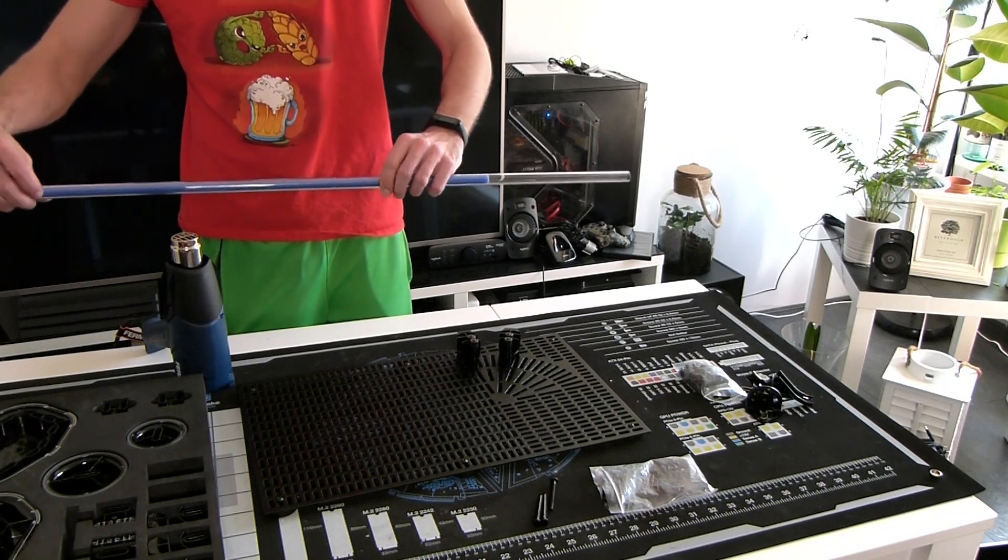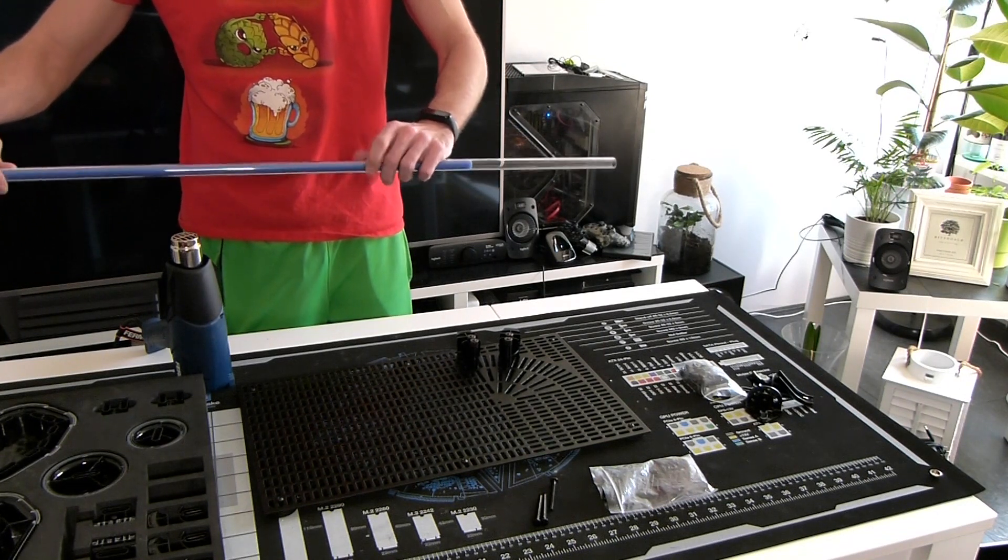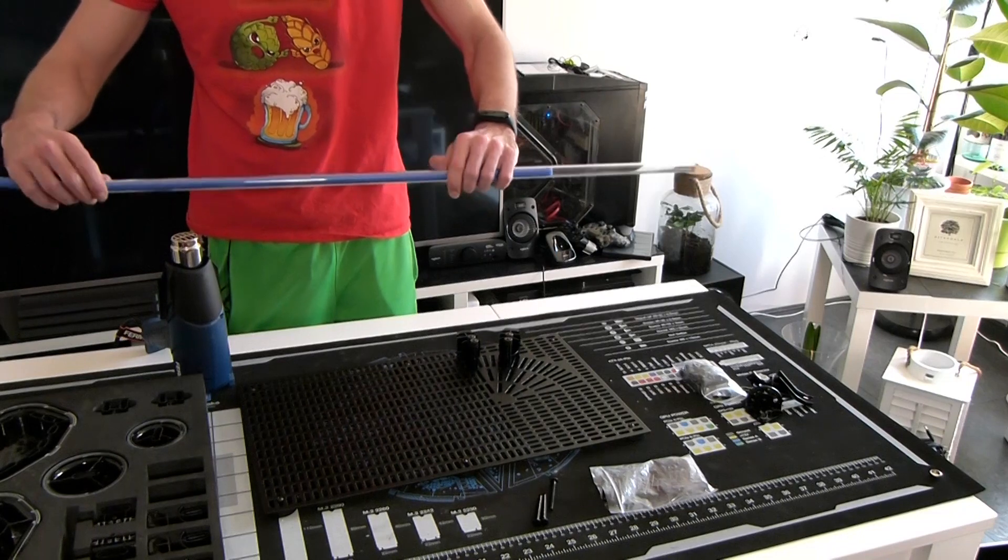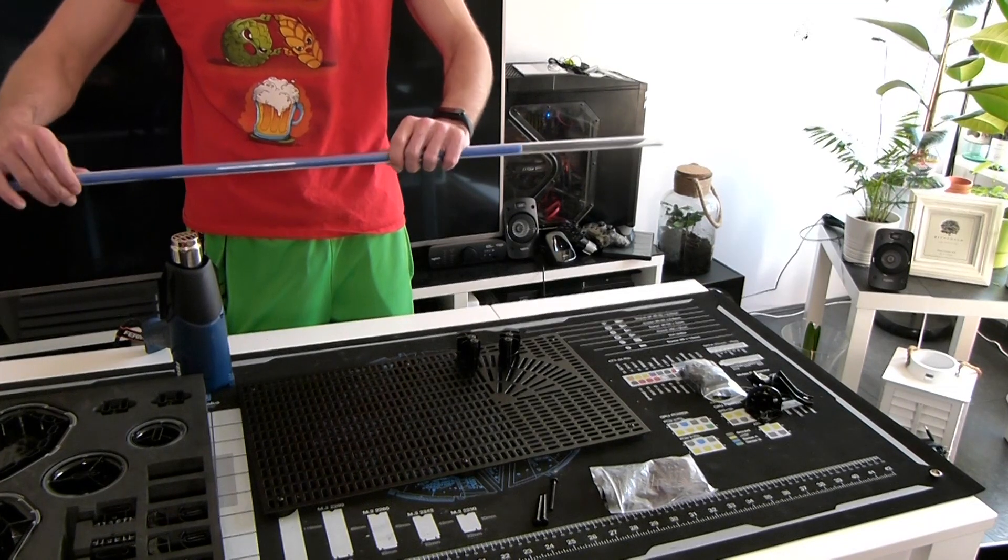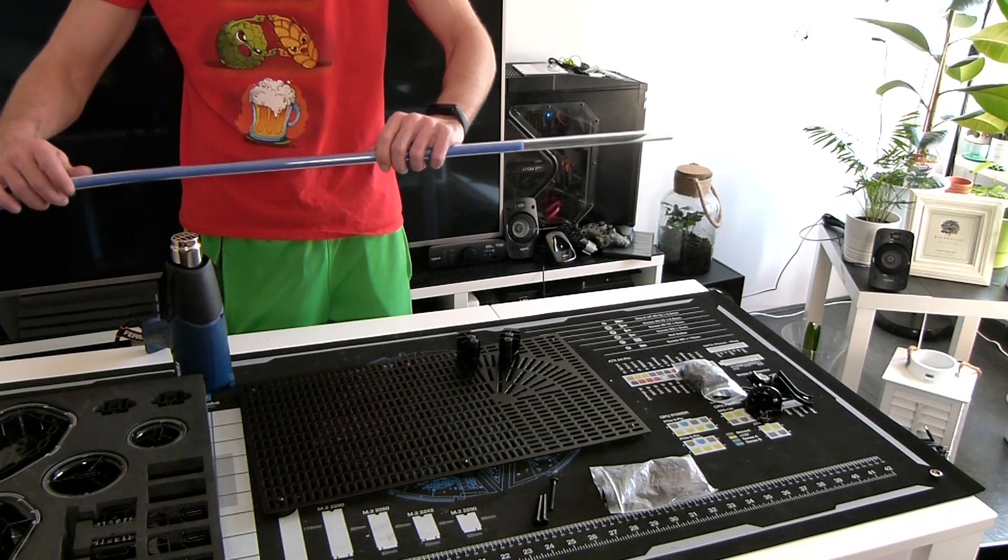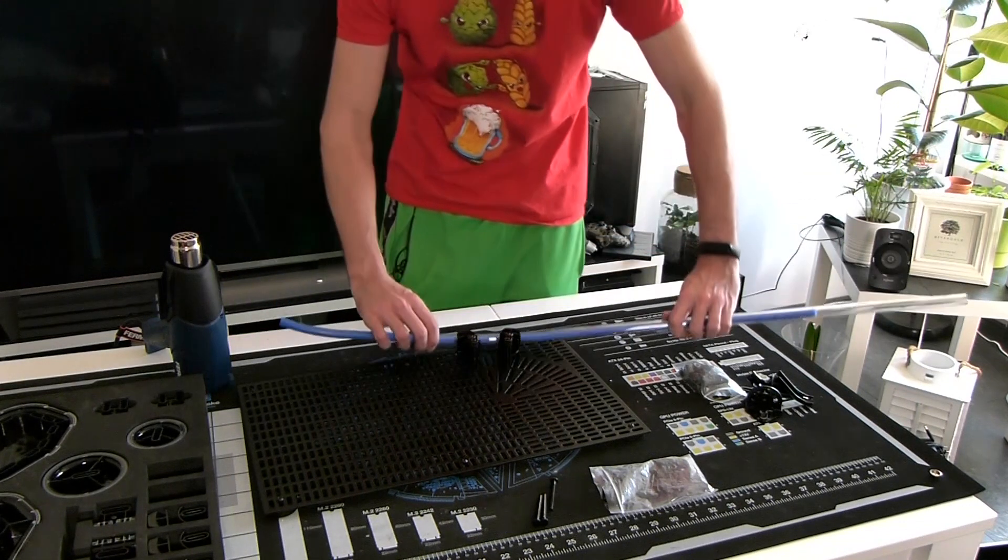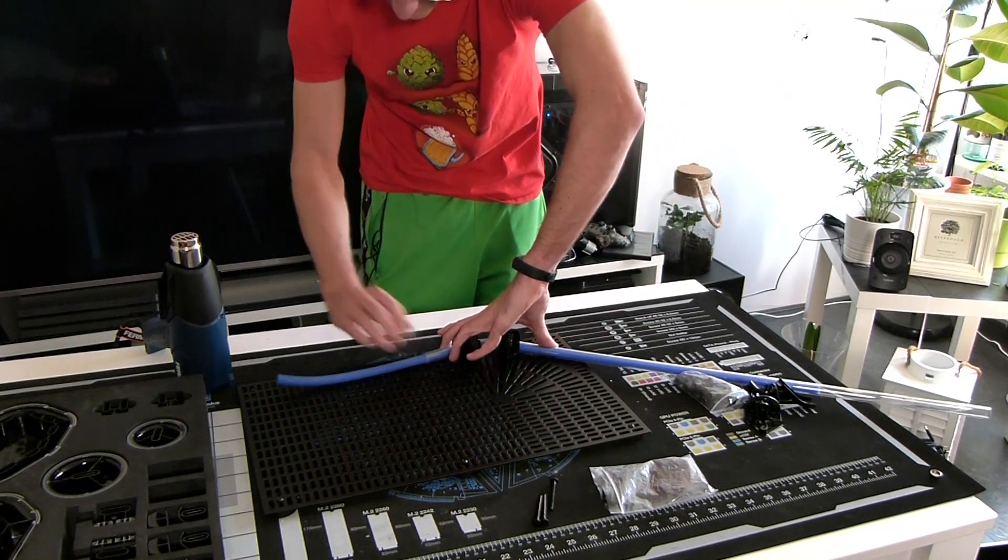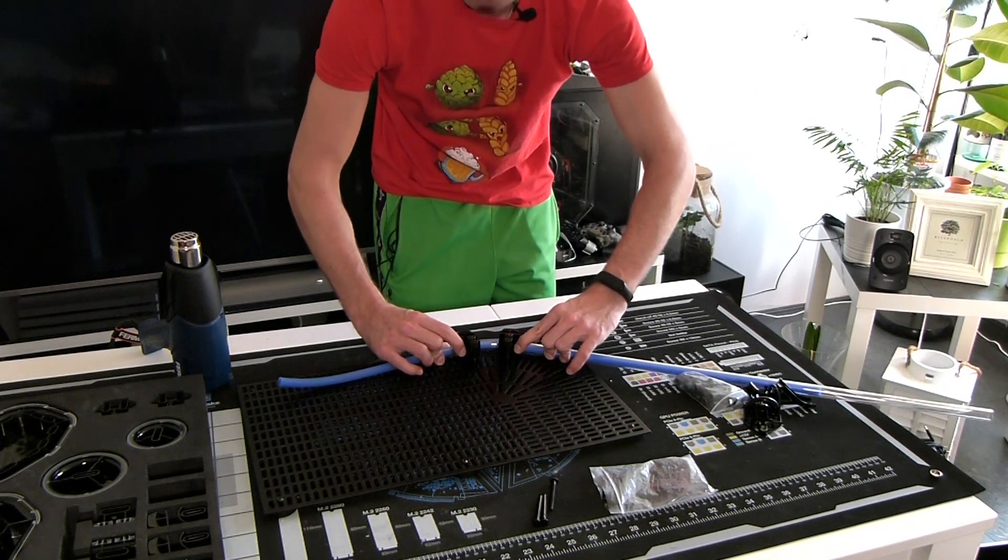And this is also the reason why you want to have the gloves on, because if you get too close you could easily burn your hands, and the tube can also become quite hot. The tube becomes softer, easily malleable. So now I can bend it into the direction that I want it.